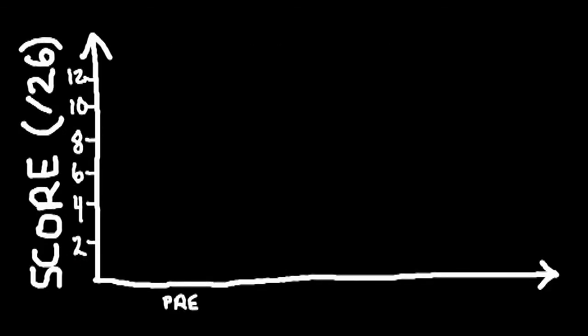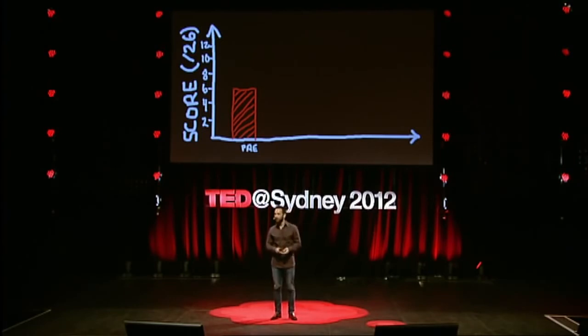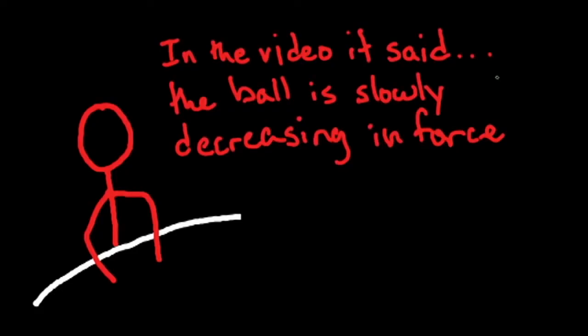But how much did they actually learn? On the pre-test they scored 6 out of 26 — and there were direct answers to at least 14 of those questions. But the average on the post-test was only 6.3. They thought they learned, but their scores didn't change. One student told me: 'In the video, it said the ball is slowly decreasing in force.' They thought there was some upward force on the ball — they couldn't even correctly remember what was presented five minutes earlier.